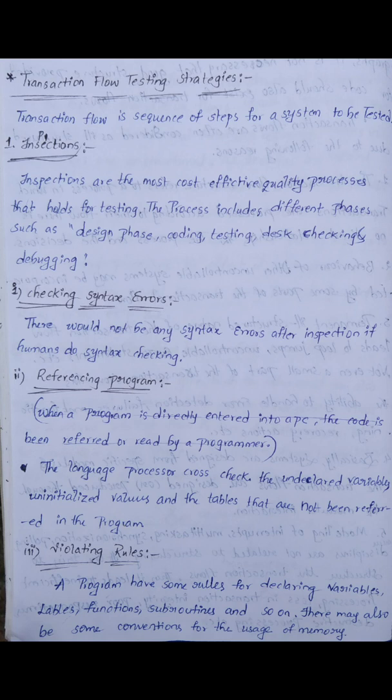First, debug and change the coding phase by checking for syntax errors. After inspection, there would not be any syntax errors if humans do proper syntax checking. Humans check this in a cost-effective manner, and we will rectify referencing problems. The language processor cross-checks undeclared variables, uninitialized values, and tables not referred to in the program.